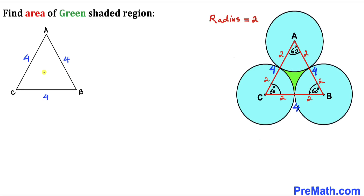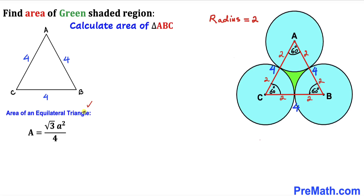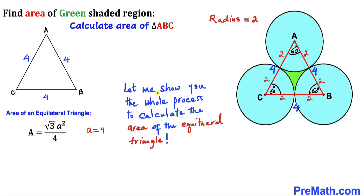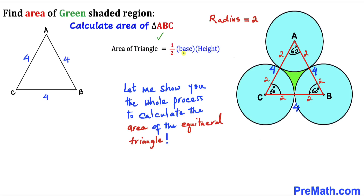Now let's focus on equilateral triangle ABC and calculate its area. We'll use the area of a triangle formula: area equals one half times base times height. Our base is 4. If we can figure out the height AH, we can easily find the area of equilateral triangle ABC.